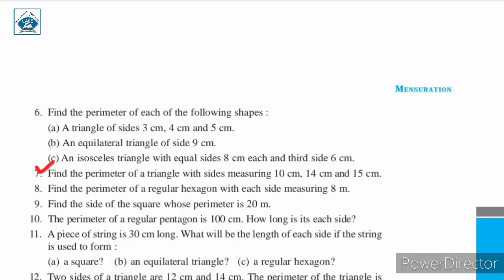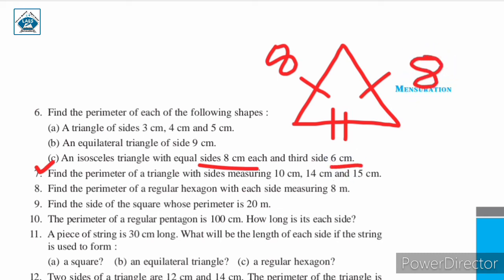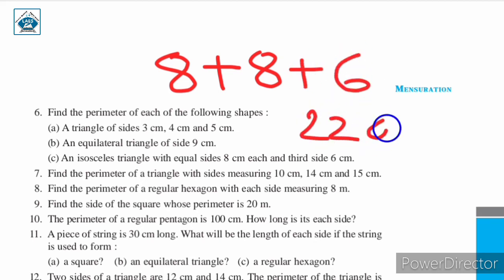Part c: an isosceles triangle with equal sides 8 centimeter each and third side 6 centimeter. An isosceles triangle has two sides of equal length and one different side. Here the two equal sides measure 8 centimeter each and the third side is 6 centimeter. The perimeter is 8 plus 8 plus 6, which equals 22 centimeter.